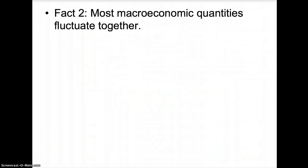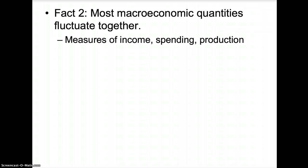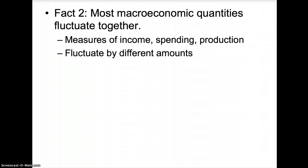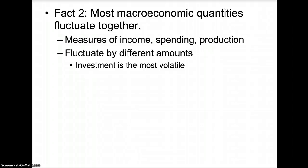Fact 2: most macroeconomic quantities fluctuate together. When we study macroeconomic variables, we will look at different measures of income, spending, and production. Although these numbers fluctuate by different amounts, they all move in the same direction. If your income decreases, you will spend less, and therefore firms will produce less. Of all the macroeconomic variables, investment is always the most volatile.